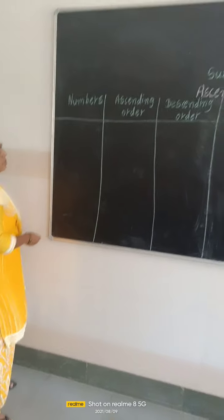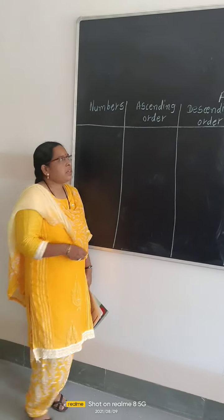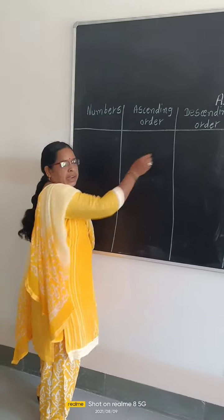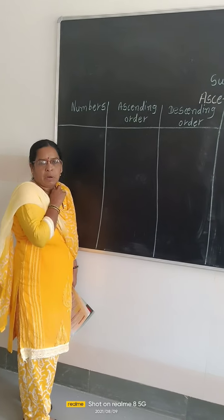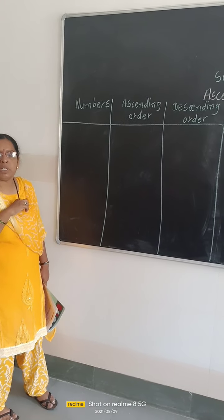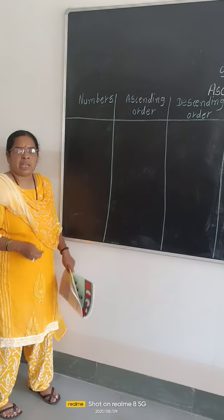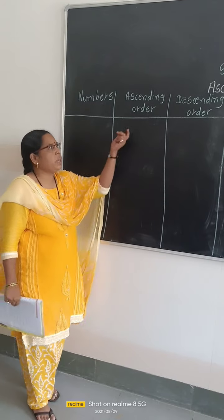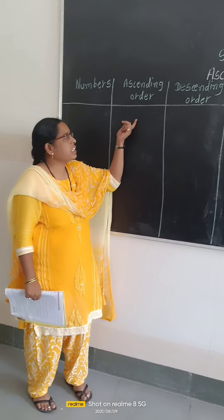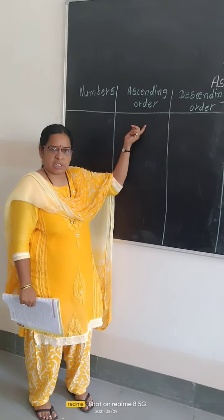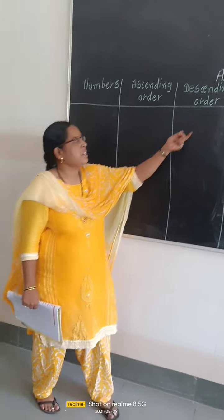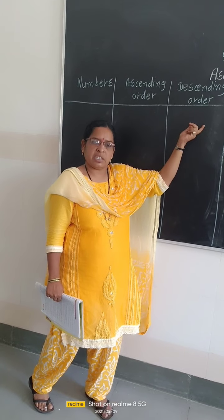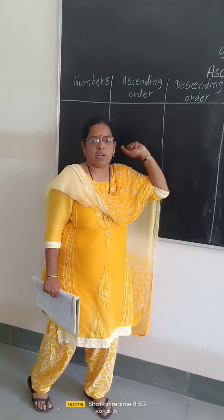Now, we already know that ascending and descending order — the given numbers we can arrange by using two ways. First of all, we are arranging the given numbers in ascending order, and then we are arranging the same numbers in their descending order.